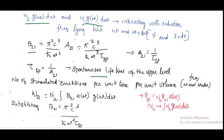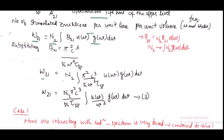The number of stimulated emissions per unit time per unit volume in the frequency range ω to ω + dω can be written as W₂₁ = N₂ ∫ B₂₁ · u(ω) · g(ω) dω. Substituting B₂₁ = π²c³ / (ℏω³τsp), and taking constant terms outside the integral, we get W₂₁ = N₂ · (π²c³)/(ℏτsp) · ∫ [u(ω)/ω³] · g(ω) dω. Let this be equation number 3.